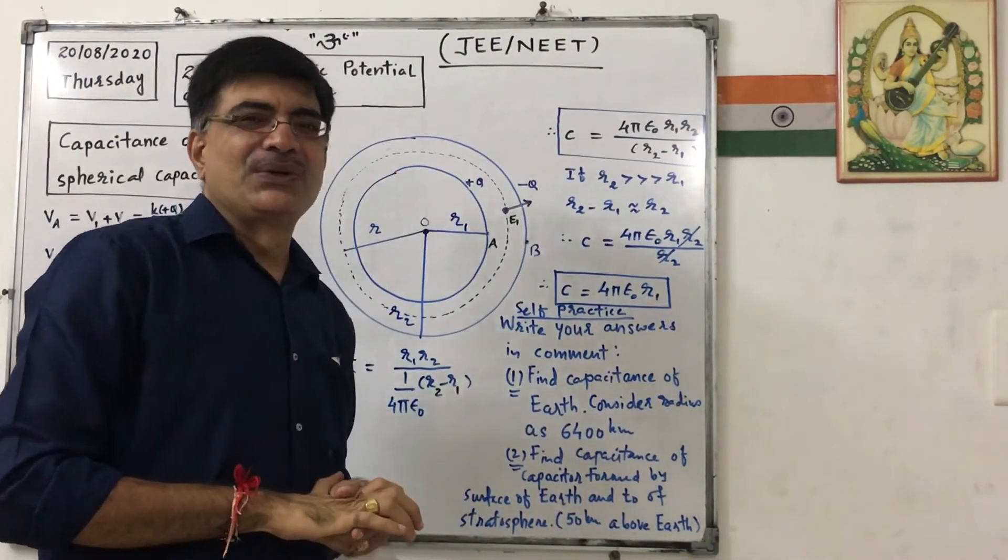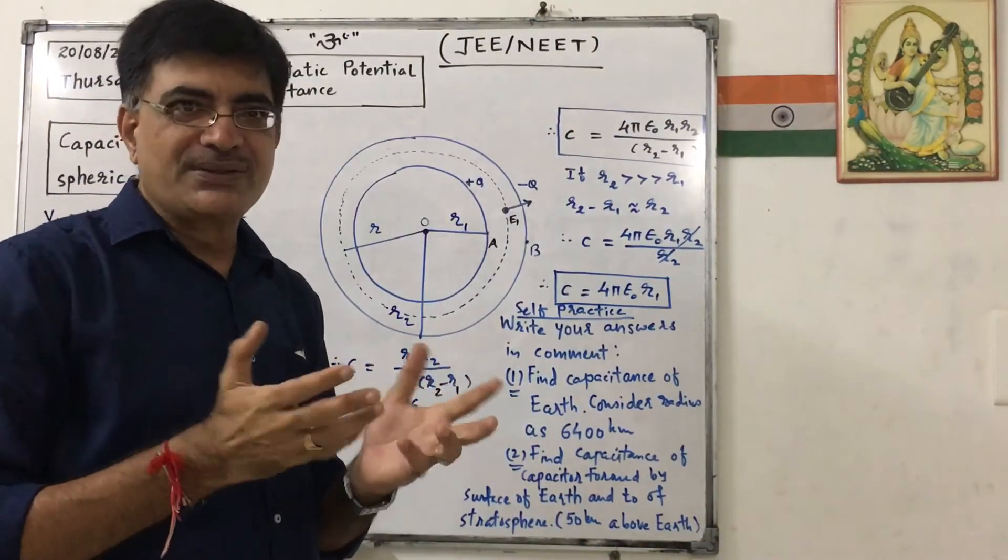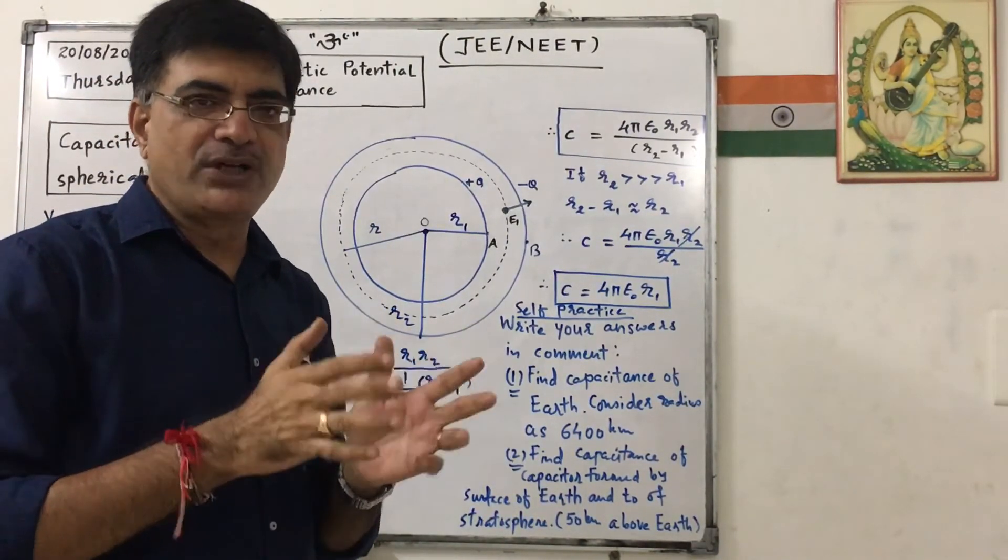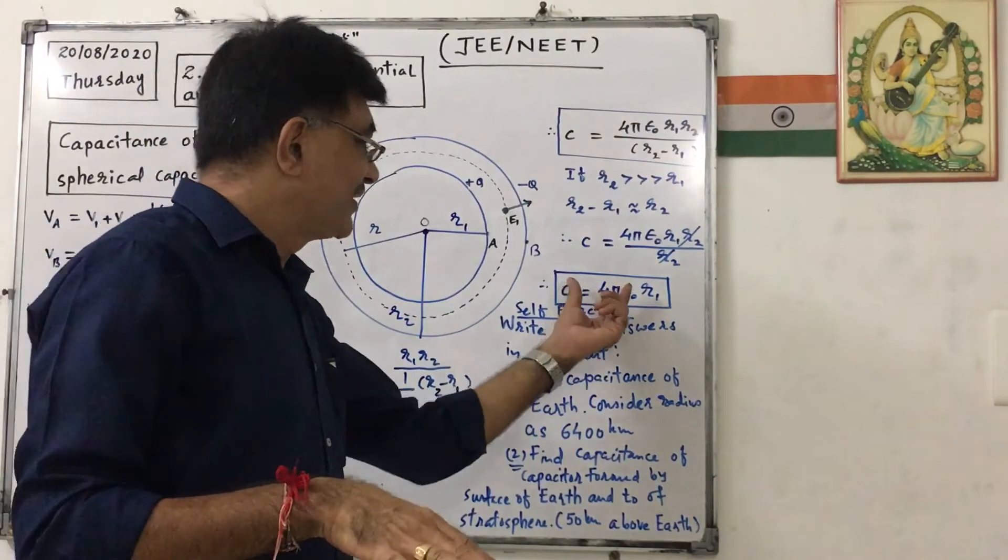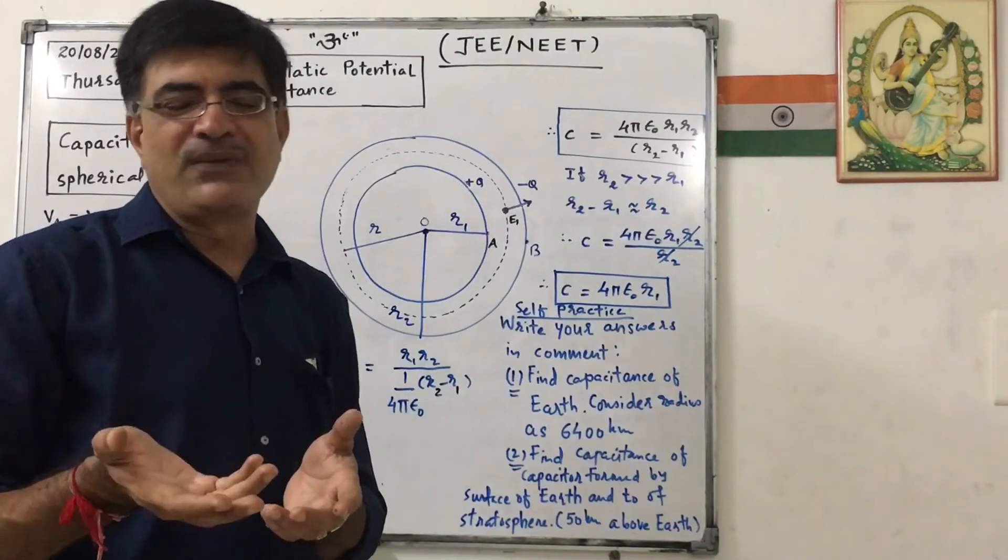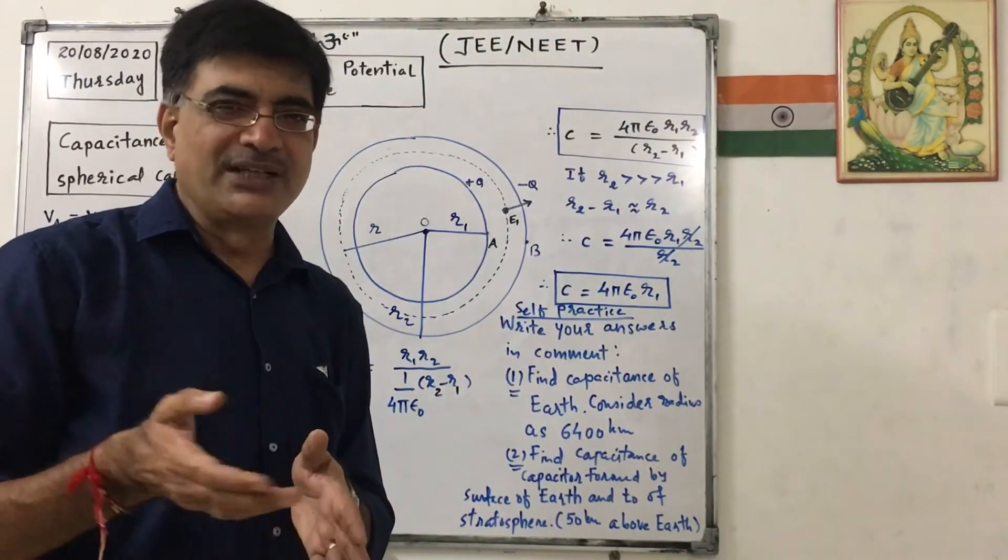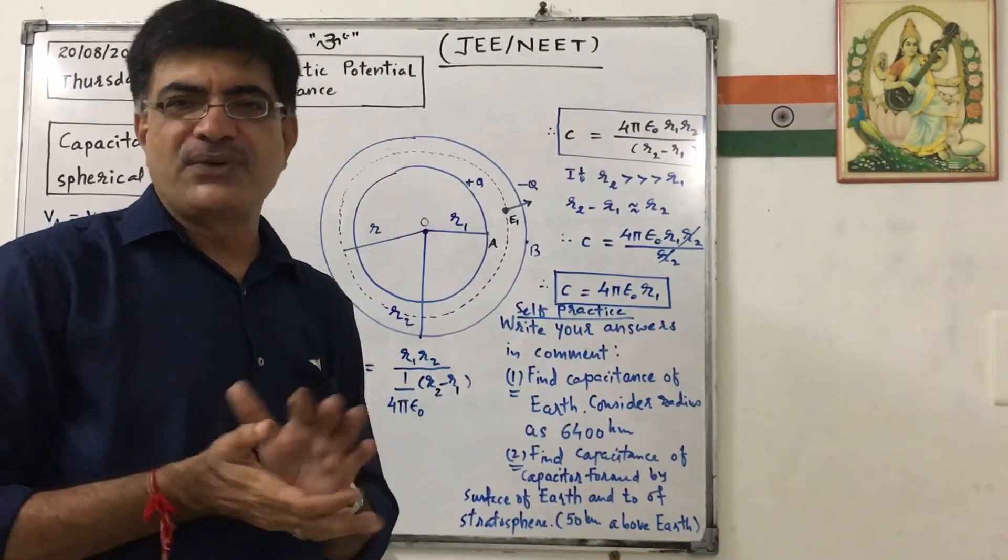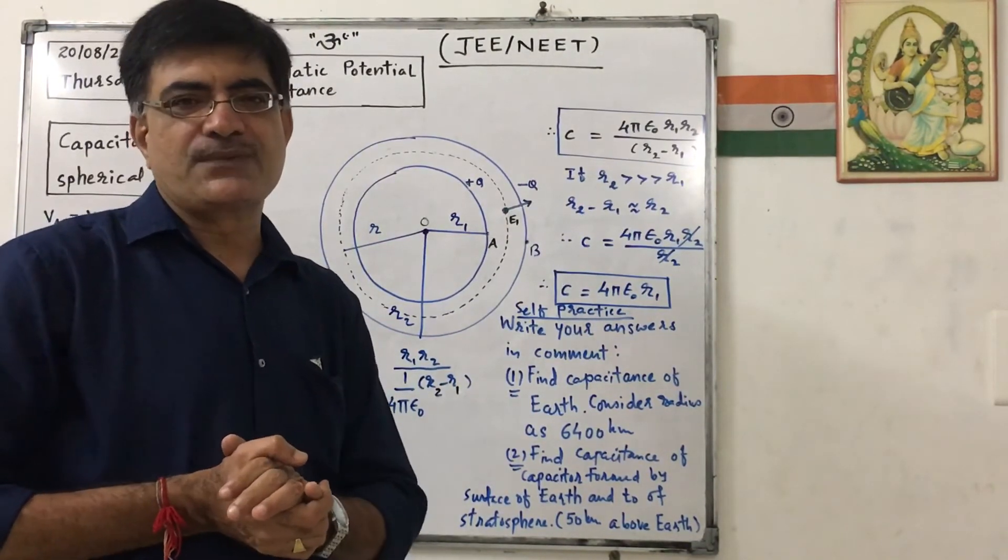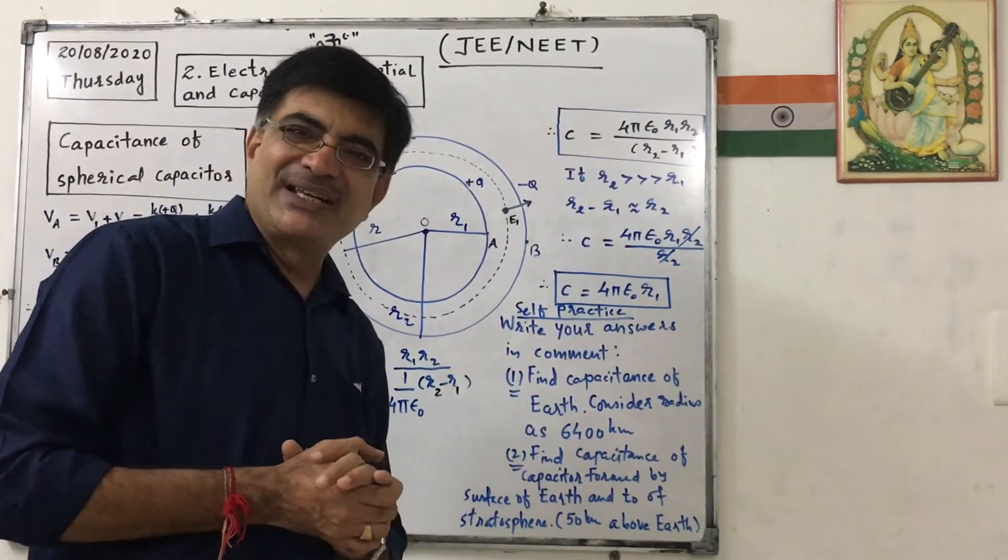So by this way we can find out capacitance of Earth. We know that radius of Earth, without knowing the charge on Earth also, because in this equation we don't need the charge. We know that value of epsilon naught, that is 8.8541 into 10 raised to minus 12. And radius of Earth we can consider as 6400 kilometer, so you have to find out capacitance of Earth.